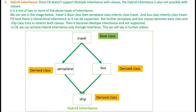Hybrid inheritance. Since C# does not support multiple inheritance with classes, hybrid inheritance is also not possible with classes. It is a mix of two or more of the above types of inheritance.